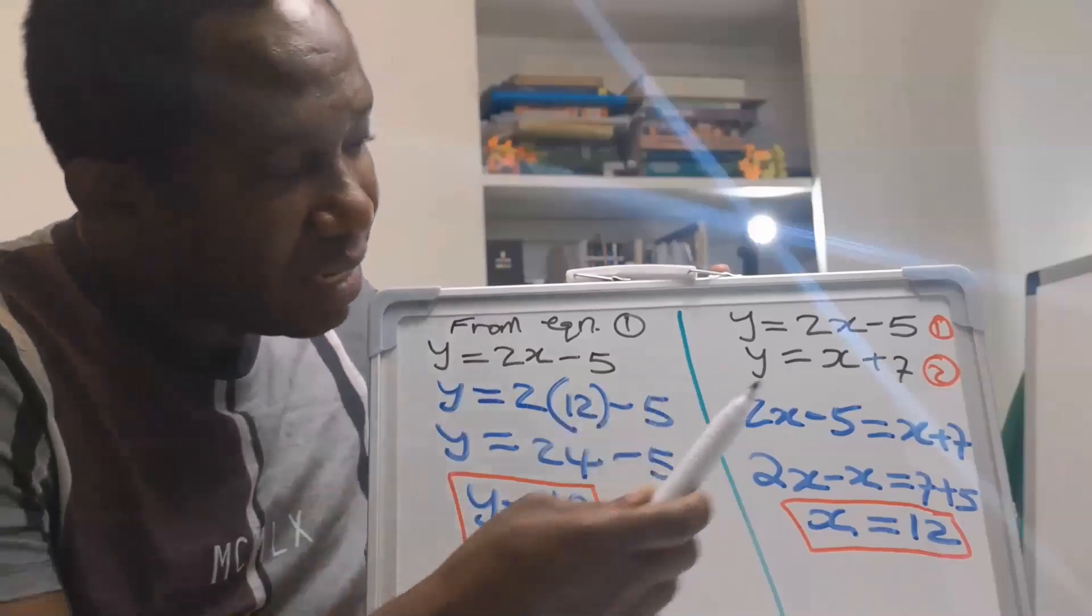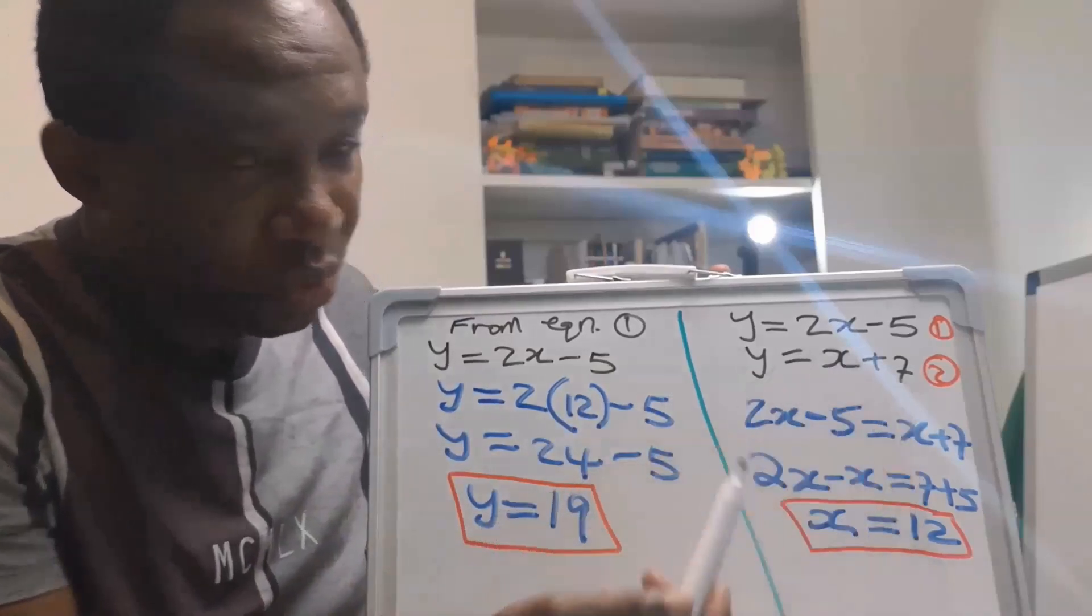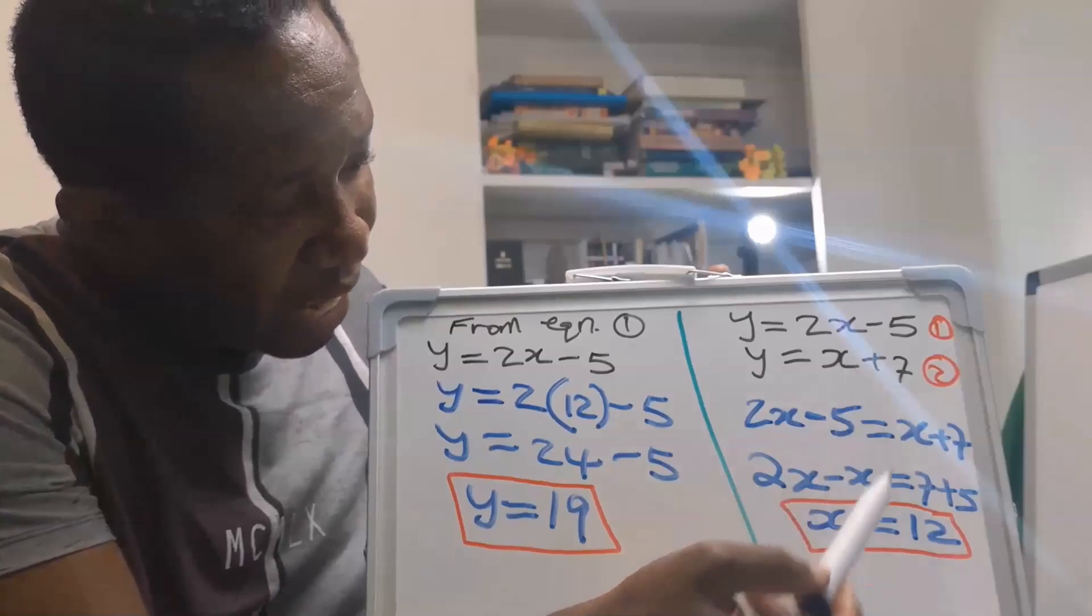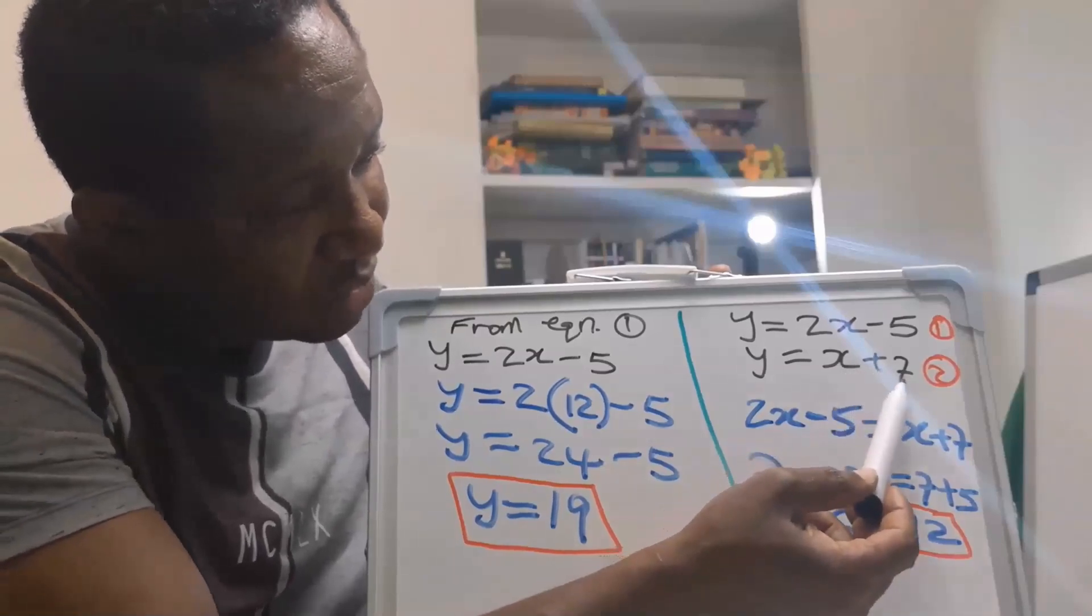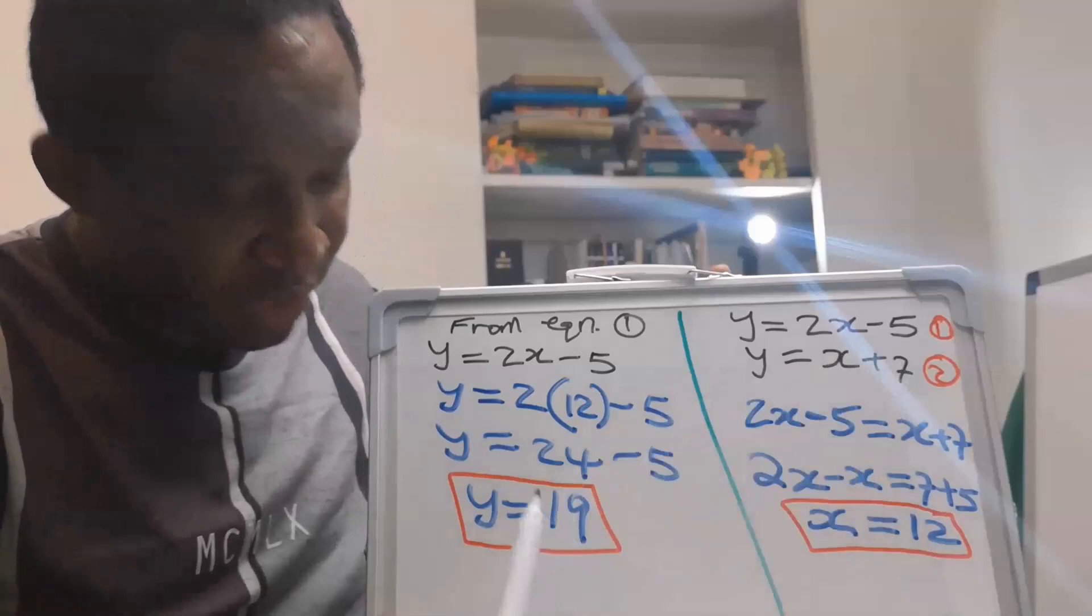If you try using equation 2, here we obtain that X is 12. 12 plus 7 will give you 19.